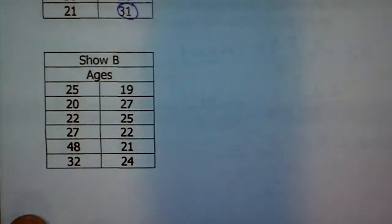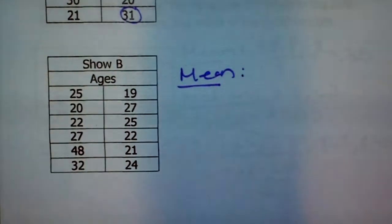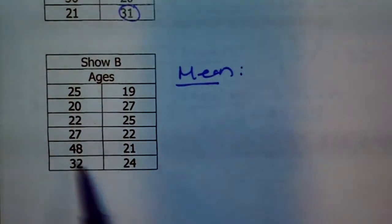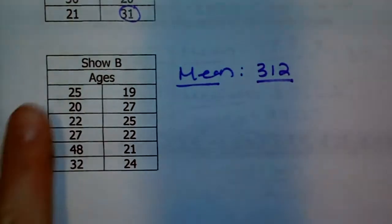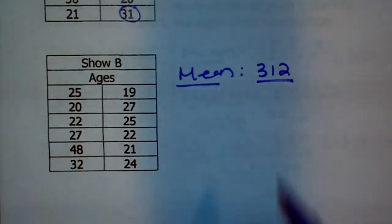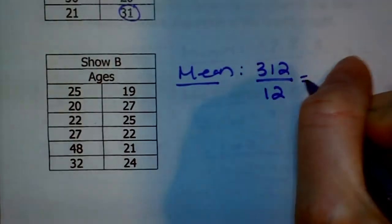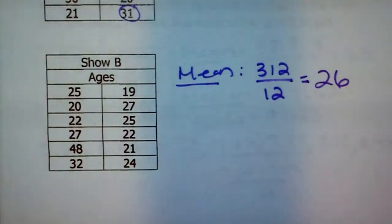Now let's find the same data from Show B. To find the mean, we're going to go ahead and add them all up. When you added them all up, you should have gotten 312. Same thing — there are 12 values in here. So when you take 312 divided by 12, it's 26. The average age on this show is 26.